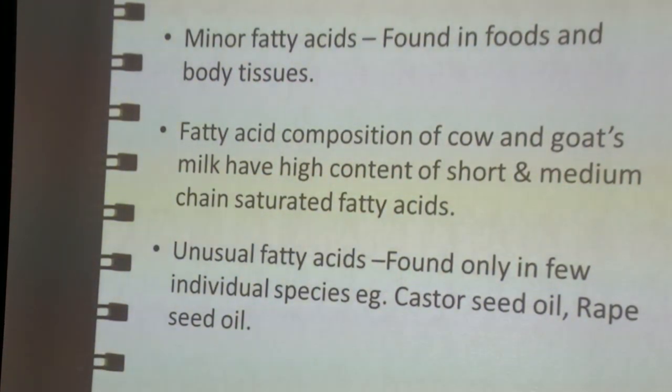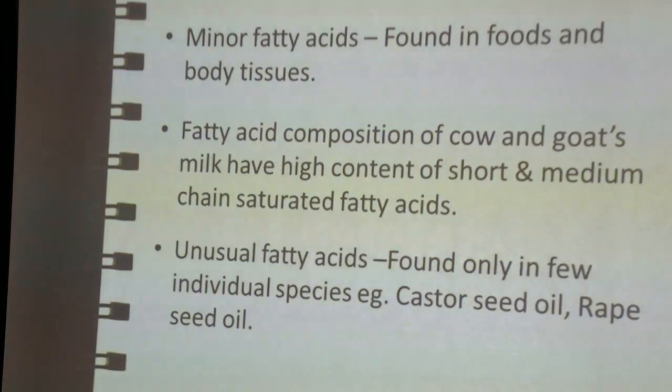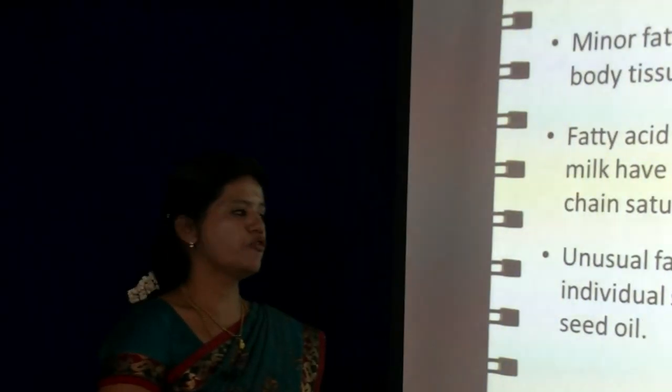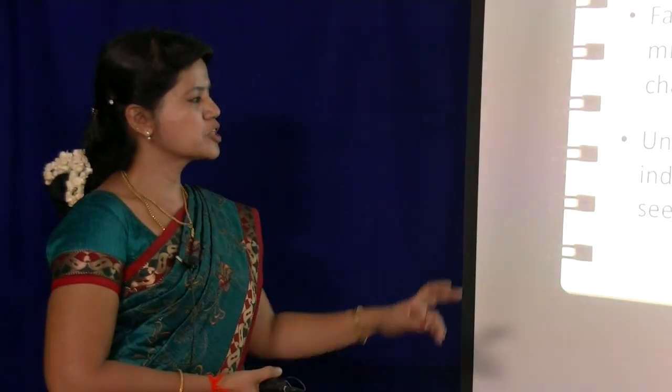Unusual fatty acids are not found in every plant and animal — they are very peculiar and present in only some groups of plants, found in very few individual species. For example, castor seed oil (Ricinus communis) and rapeseed oil (Brassica napus) contain ricinoleic acid and erucic acid respectively. These two fatty acids found in these specific plants are hence named unusual fatty acids.